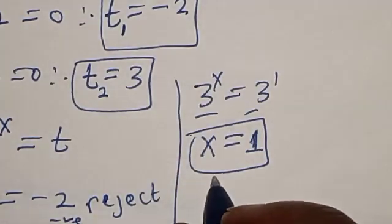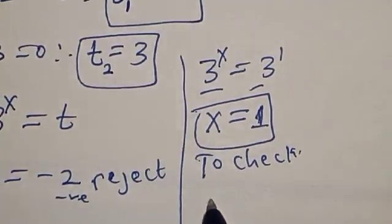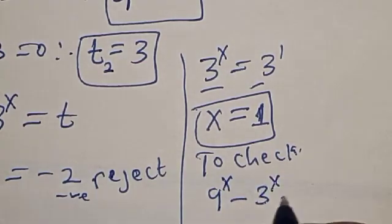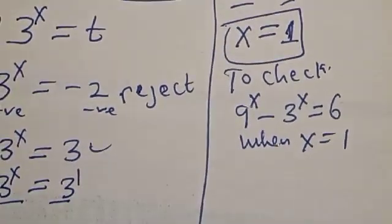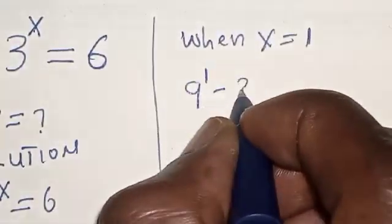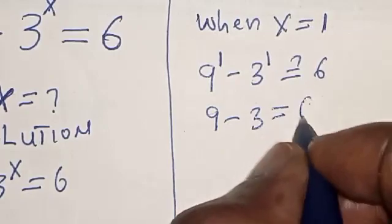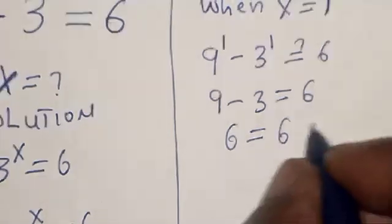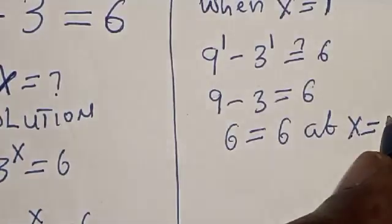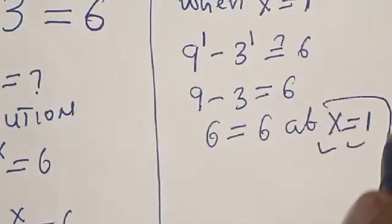Now let's verify our answer. Substituting x equals 1 into the original equation: 9 raised to power 1 minus 3 raised to power 1 equals 6. Nine minus three equals six. The left-hand side equals the right-hand side when x equals 1. If you love the class, please like, share, comment and subscribe. Thank you.